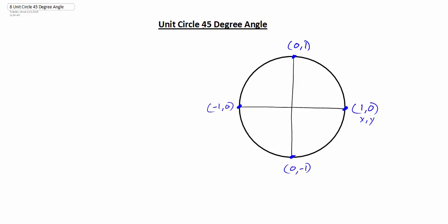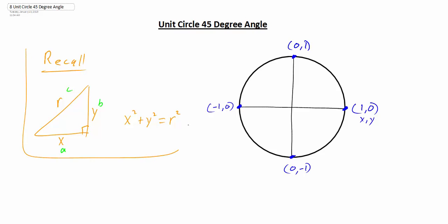The first thing we want to look at is a 45-degree angle. Before we do that, I want to recall the Pythagorean Theorem. We know that if we have a right triangle, and I'm going to label this as x, y, and r — in the past you might think of this as a, b, and c — the Pythagorean Theorem states a² + b² = c², or in this case, x² + y² = r². This is what we're going to use as we explore this unit circle.